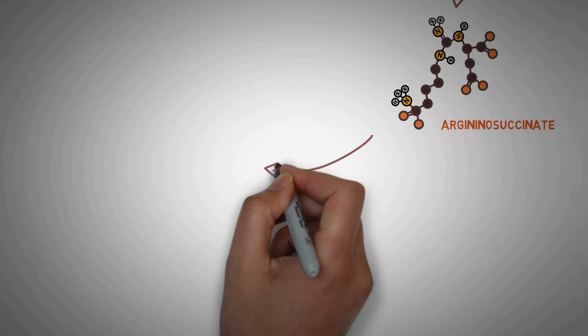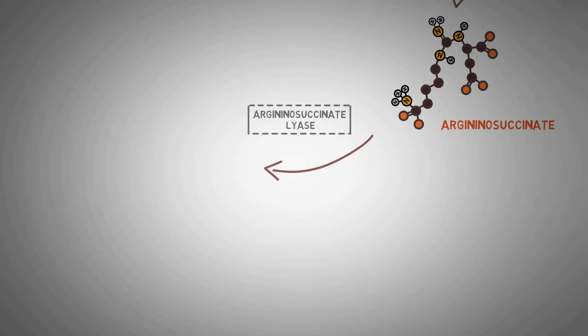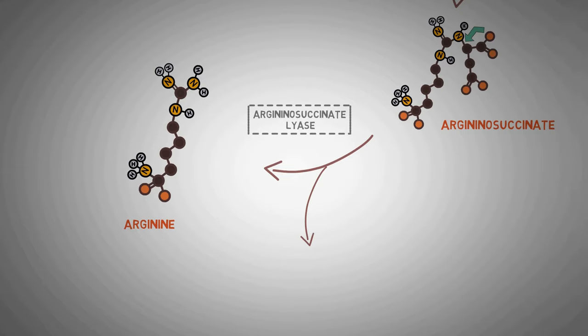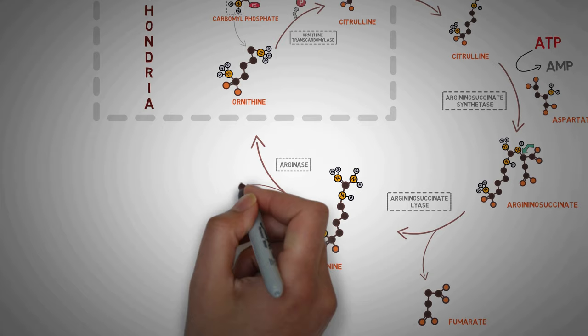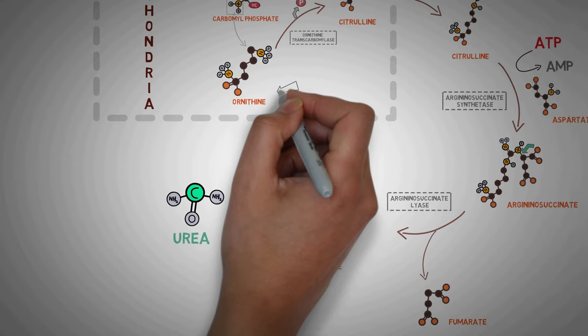First, the argininosuccinate is broken down by the enzyme argininosuccinate lyase here at this point in its structure. This split leads to the formation of two molecules, arginine and fumarate. The arginine that is produced is again broken down, this time by the enzyme known as arginase. And this finally leads to the formation of two compounds. The first one is urea and the second is the ornithine only. One molecule of water is also used in this reaction.